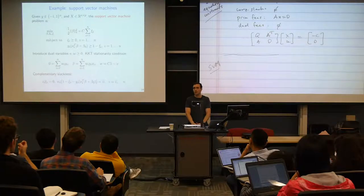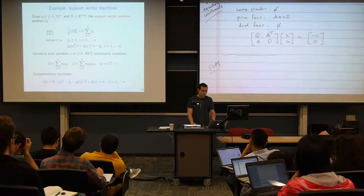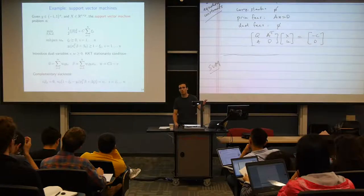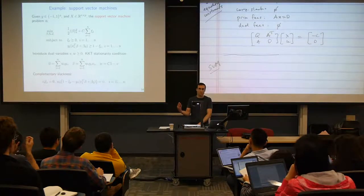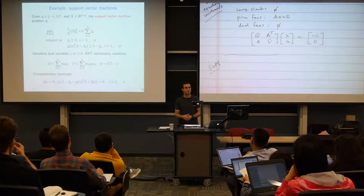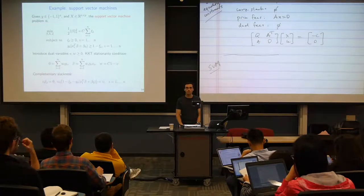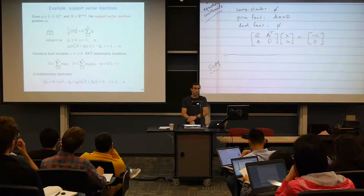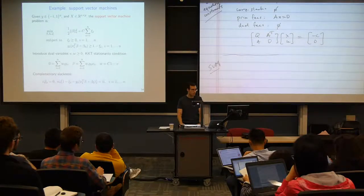So once we write them down, if we were to find beta, beta naught, and psi — which are the primal variables — and the dual variables W and V that satisfy those conditions, then we know we'd have the solution. And vice versa: we know that any solution must also satisfy those conditions.